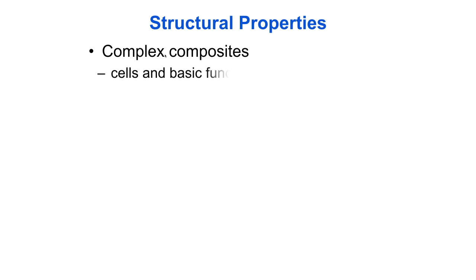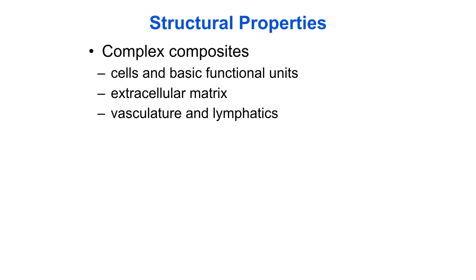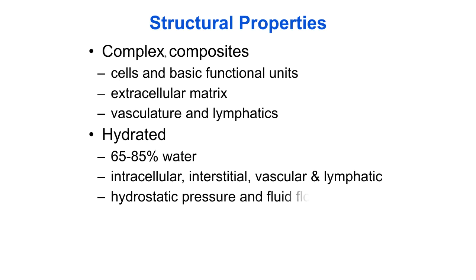Important structural properties of soft tissues include that they are complex composites consisting of cells and basic functional units, extracellular matrix, vasculature and lymphatics. They are highly hydrated, being 65 to 85 percent water, and the water content is well regulated and maintained between intracellular, interstitial, vascular and lymphatic compartments.